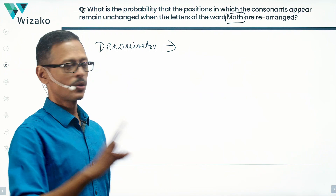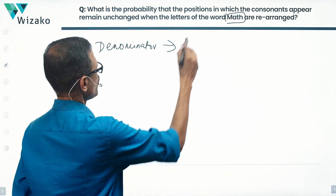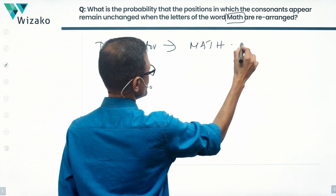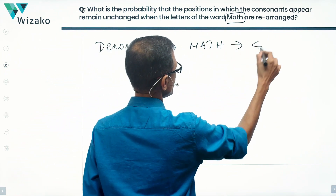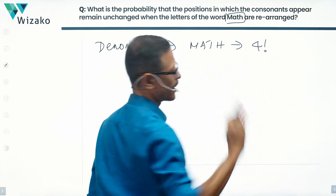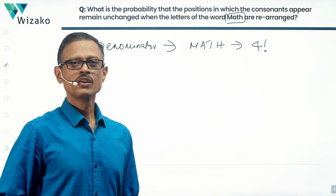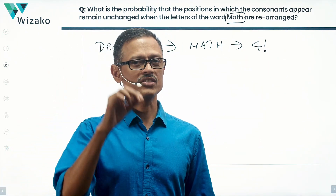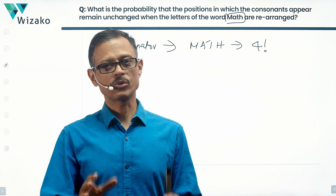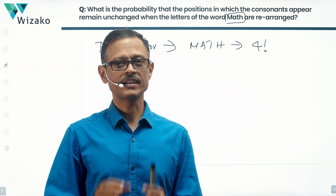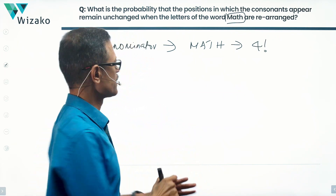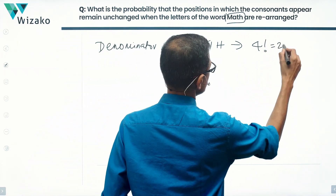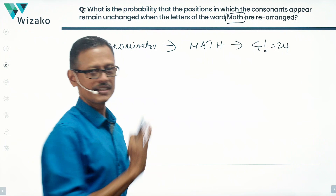MATH is a four-letter word. All four letters are essentially distinct, so they will reorder in four factorial ways. So the total number of ways in which the letters of the word MATH can be reordered is four factorial — that's our denominator. Four factorial is equal to twenty-four, so the denominator part is done.